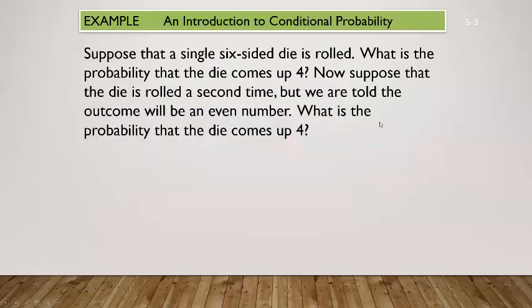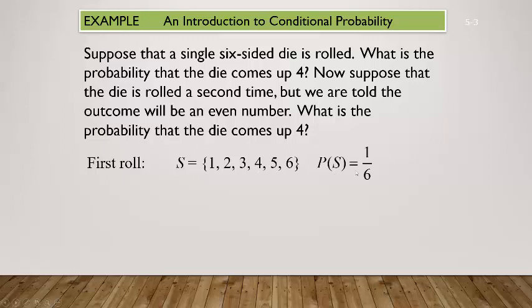Suppose that a single six-sided die is rolled. What is the probability that the die comes up with a four? The sample space for a six-sided die is one, two, three, four, five, or six. So the probability that we just come up with a four is one out of six.